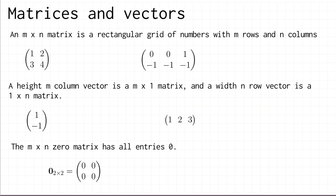An m by n matrix means a rectangular grid of numbers with m rows and n columns. It's important to get those the right way around: the first number m is how many rows you've got and the second number is how many columns. For example, a matrix with two rows and three columns would be a two by three matrix, with rows labeled one and two, and columns one, two, and three.